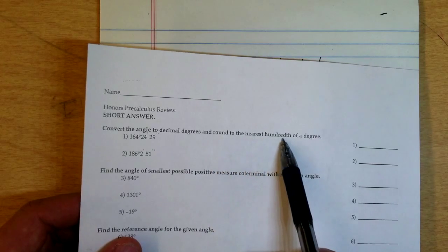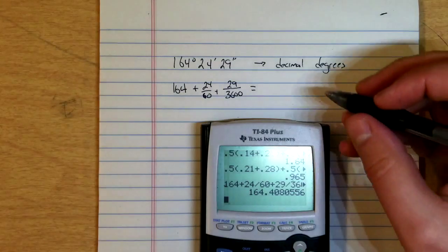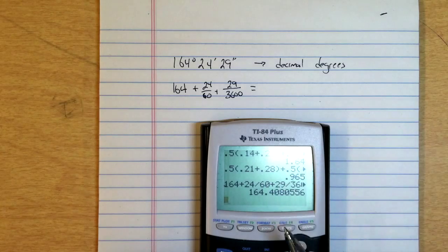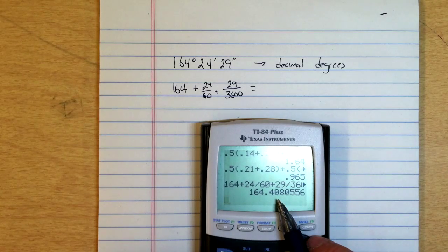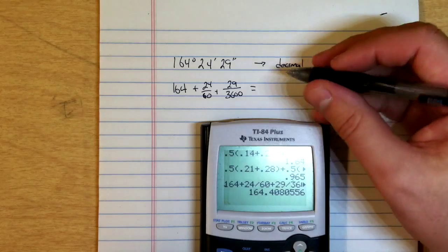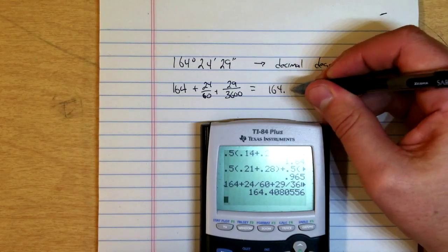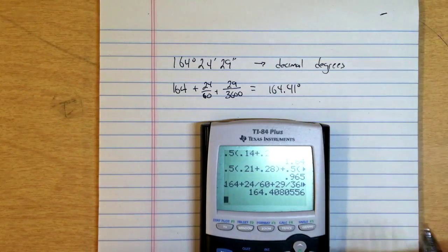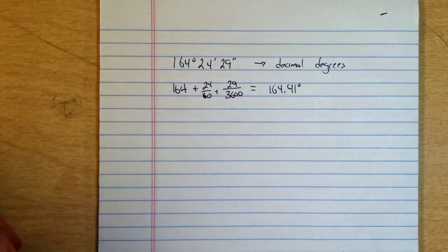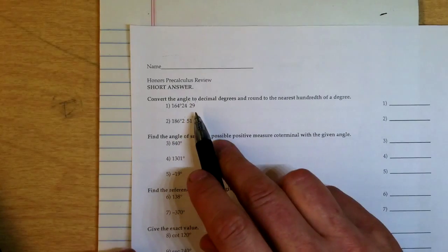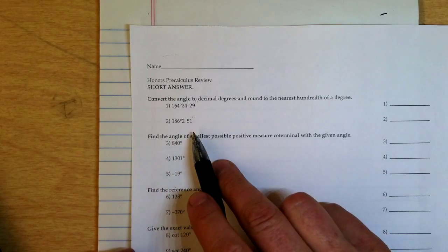The instructions tell us to round to the nearest hundredth of a degree. The hundredths place is right there, so we're going to call it 164.41 degrees. That's number one, and you'll do number two the same way.